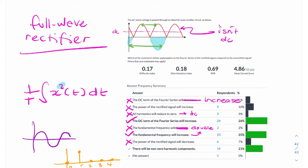We now have distorted the signal and we've introduced higher harmonics. So this is a direct result of our rectification. So yes, there will be non-zero harmonics.